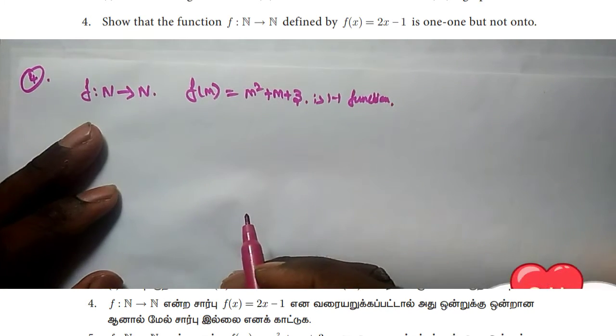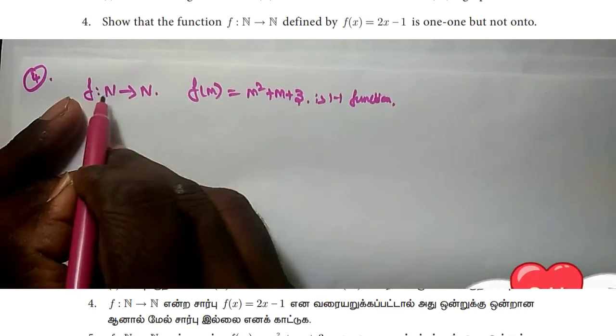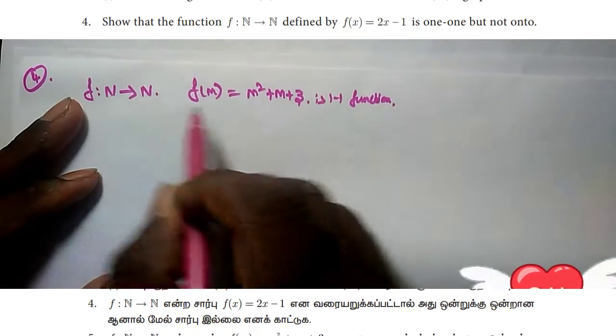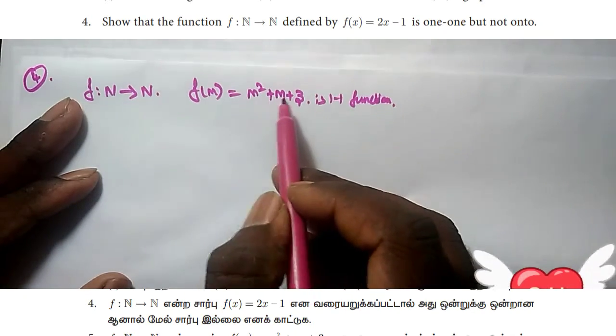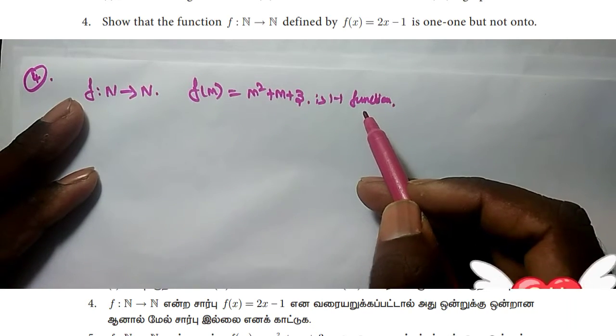Hi friends, welcome. In this video, let me show you a one-to-one function problem. The problem is: show that the function f from N to N, where f(m) equals m squared plus m plus 3, is a one-to-one function.